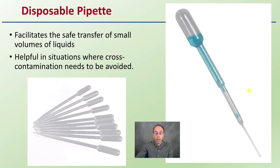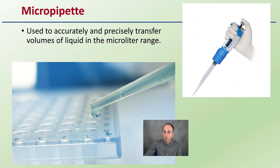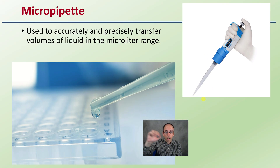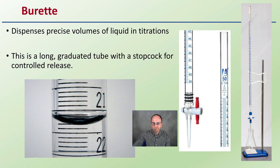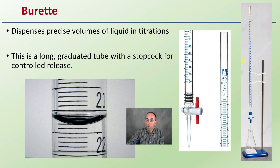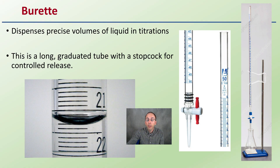The micropipette is very similar to the disposable pipette, but these are more precise and not disposable — we toss the little tips out and reuse the actual micropipette. It's great for repetitive motions with very precise measurements of small amounts of liquid in the microliter range. The burette is used for titrations. It looks like a long graduated cylinder with a valve that precisely controls the release of liquid for those titration experiments.